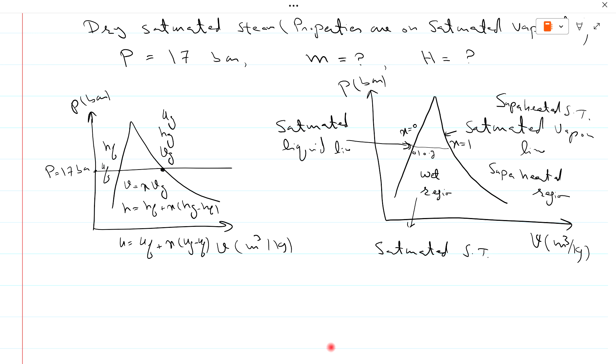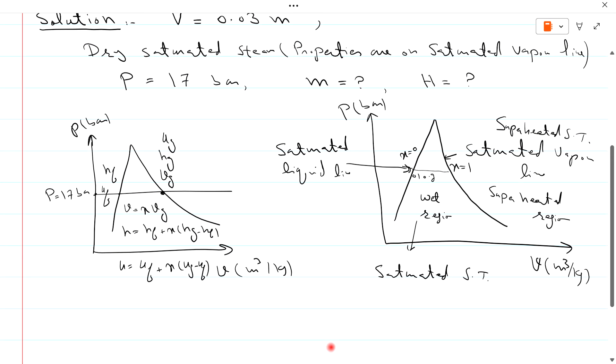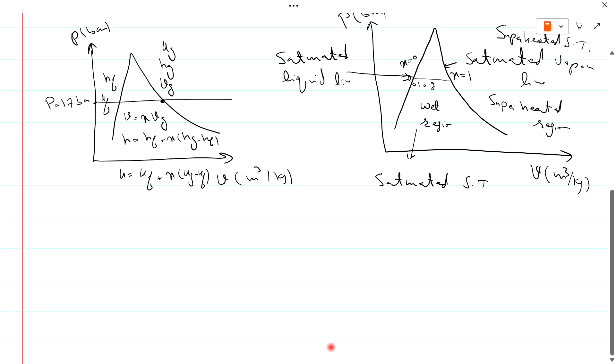We have to find m and total volume is given to us, so we can find specific volume from saturated steam table. As the properties are on saturated vapor line, so we will use saturated steam table.